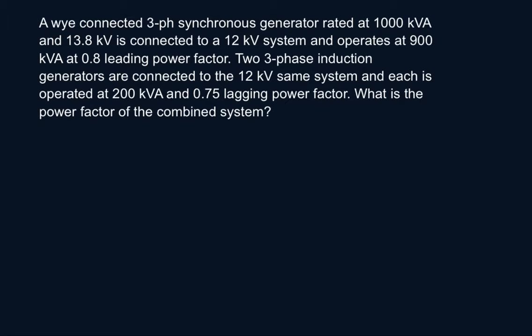This problem is about finding the power factor of an entire combined system. Reading the problem here, we are given a generator operating at 900 kVA with 0.8 leading power factor, and two other induction generators connected to the same system operating at 200 kVA with 0.75 lagging power factor.